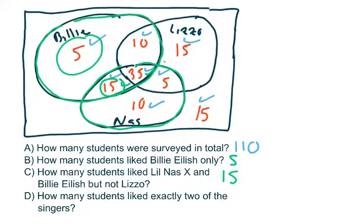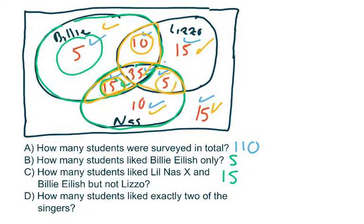Finally, how many students like exactly two of the singers? The outer regions — these people only like one singer. The people in the very middle like three singers, and the people on the outside don't like any. The people who like exactly two singers are represented by the three pairwise overlap regions. Adding those three numbers: 15 plus 5 is 20, plus 10 is 30. Once the data is organized into a Venn diagram, it's not hard at all to answer the questions. I hope this is a great example of a tool you can use to analyze survey questions. Thanks very much.